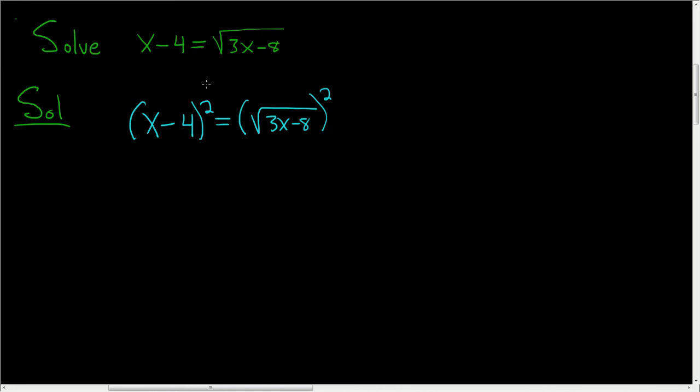On the left-hand side, it's being squared, so one way to do this is to write it twice. So x minus 4, times x minus 4. And on the right-hand side, when you square the square root, it goes away, so you just get 3x minus 8.